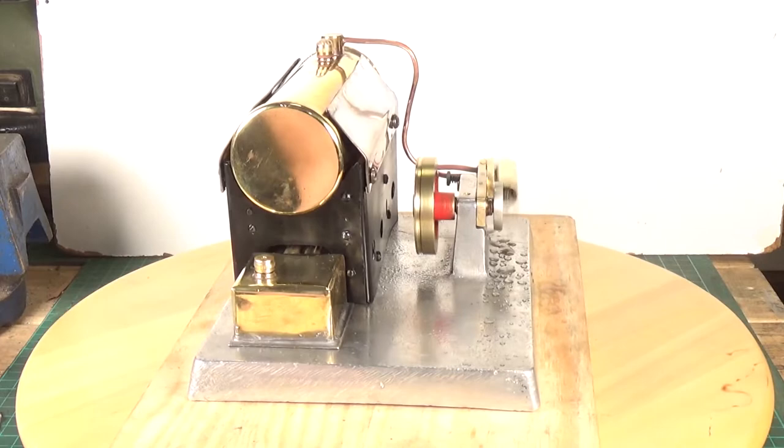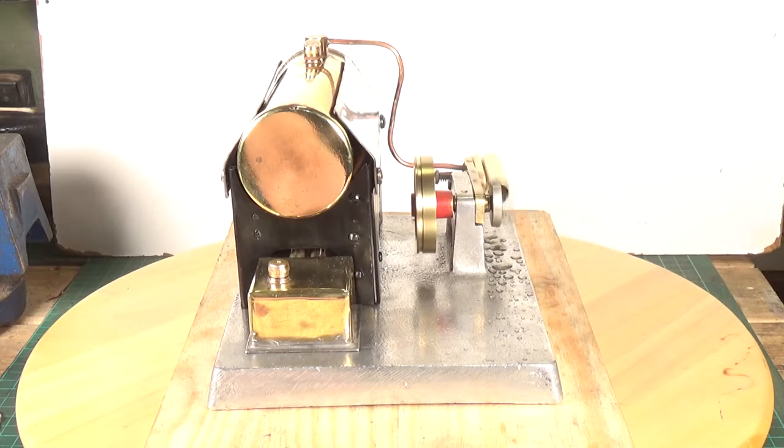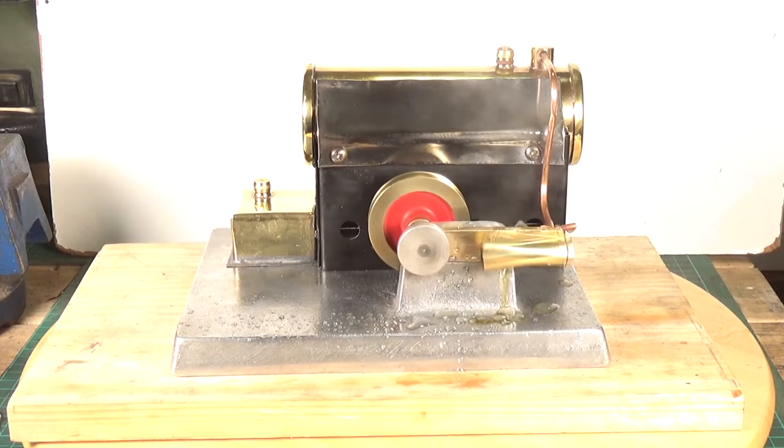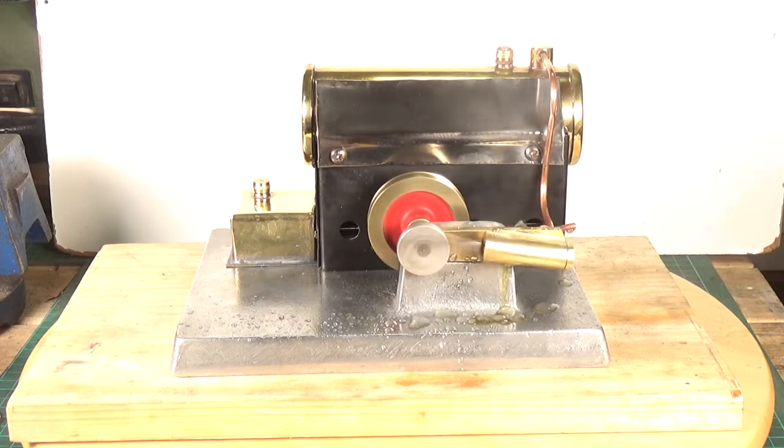Very, very slight wobble on the flywheel. Not sure whether that's the flywheel out of true or the actual crankshaft. A slight wobble there. But other than that, no. Look at that. Superb. As I said, we reckon this was probably made between 1965 and 1975. So it's a pretty old engine.